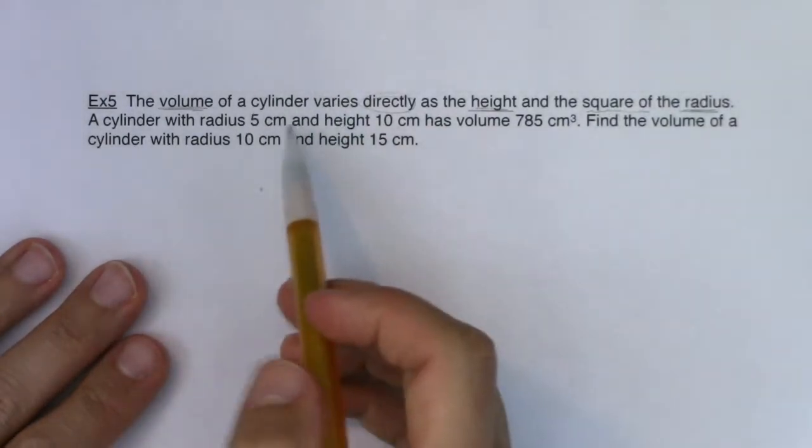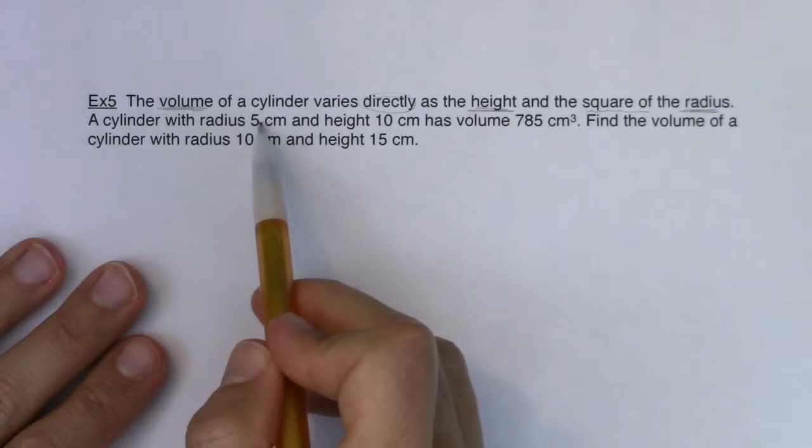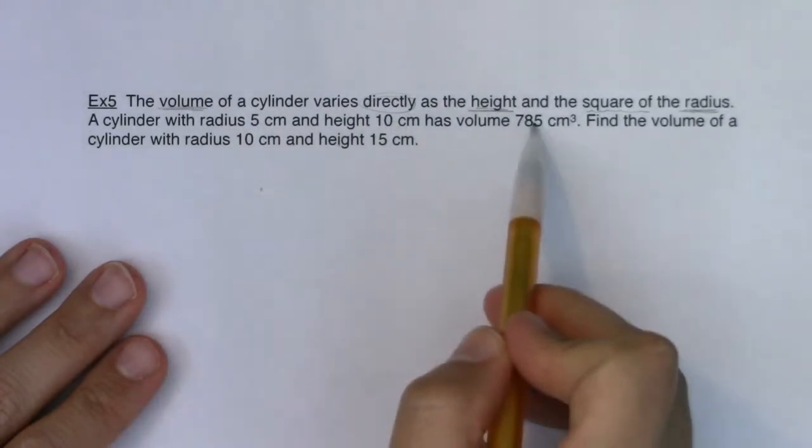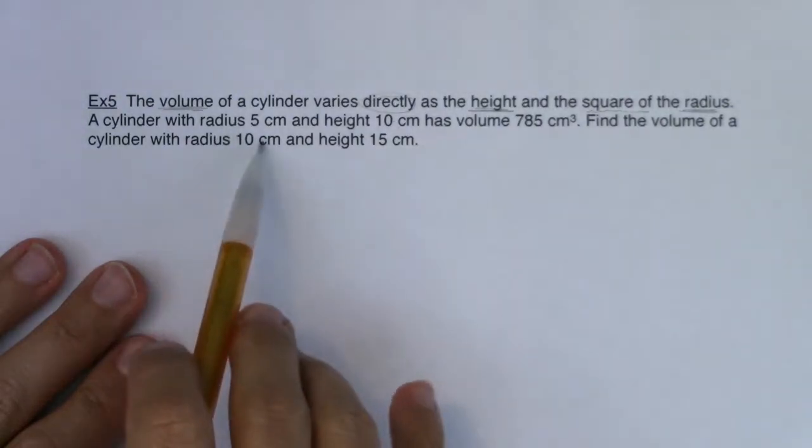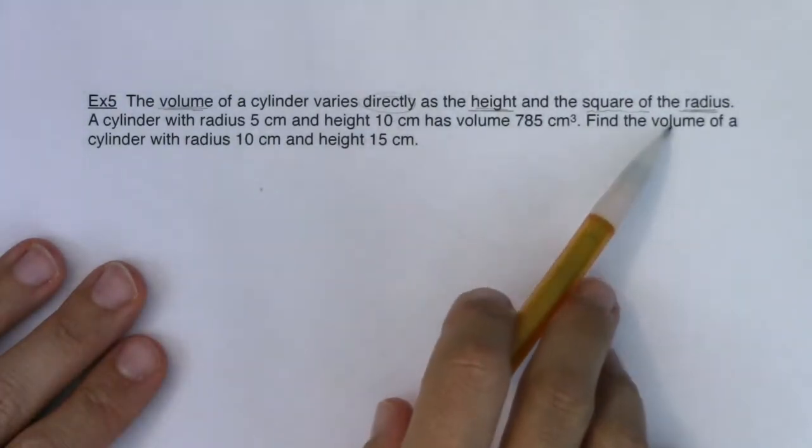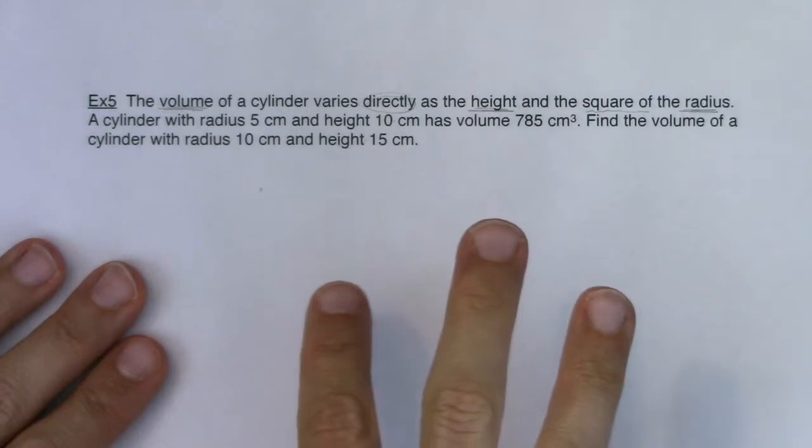I hear a complete ordered triple: radius 5, height 10, volume 785. And then I hear an incomplete ordered triple. I have a radius and height, but I'm missing a volume. So those are all just things to keep in mind as we're about to go through our four steps.